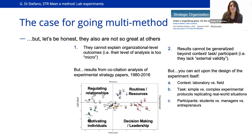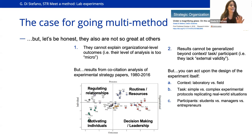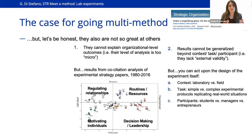The second limitation comes from the fact that it is tricky to generalize results outside of your context, task, and participants. To be honest, this is true for every method, but as an experimentalist you're going to get a lot of pushback on this topic from reviewers and editors, which is a little bit unfair — but this is the reality. So if you want to use this method, you have to become very good at explaining why your particular population, task, and context is the best thing you could do to study the phenomenon you're interested in.